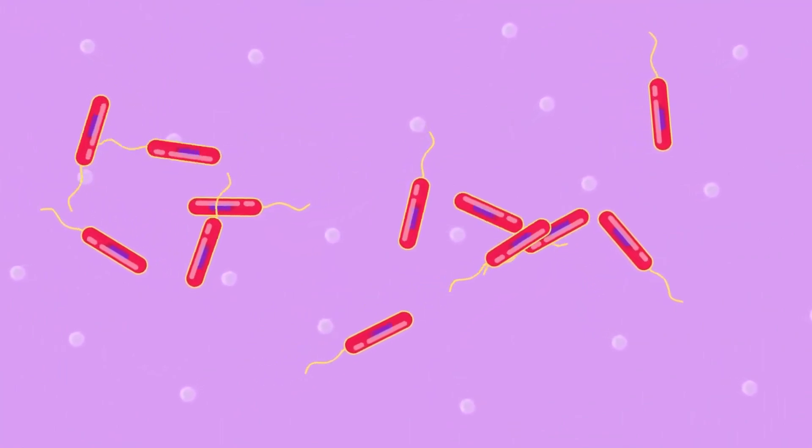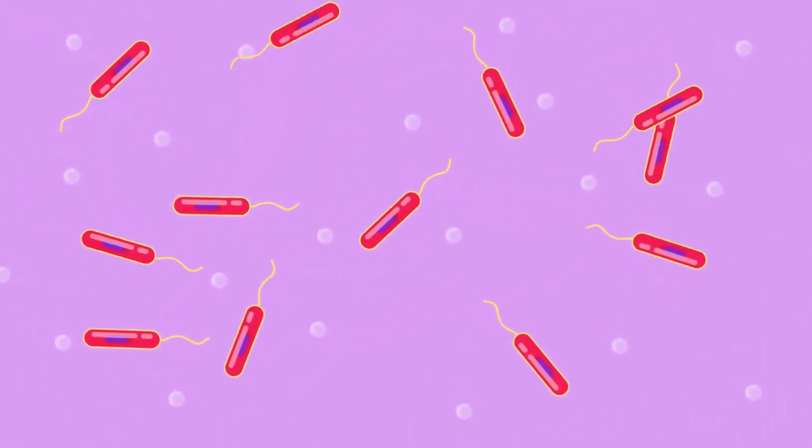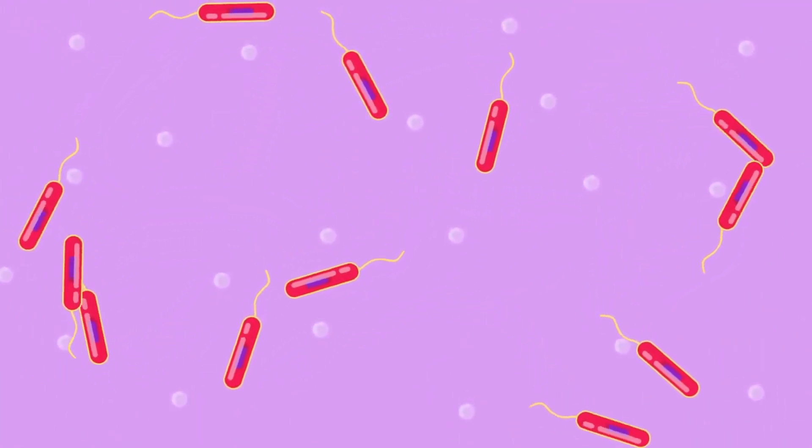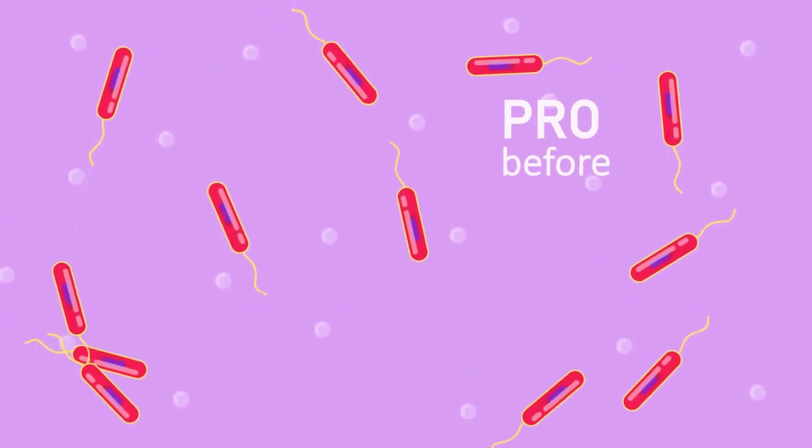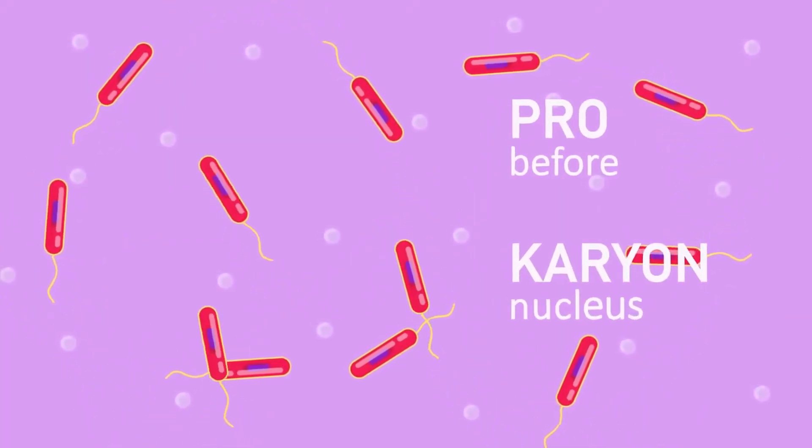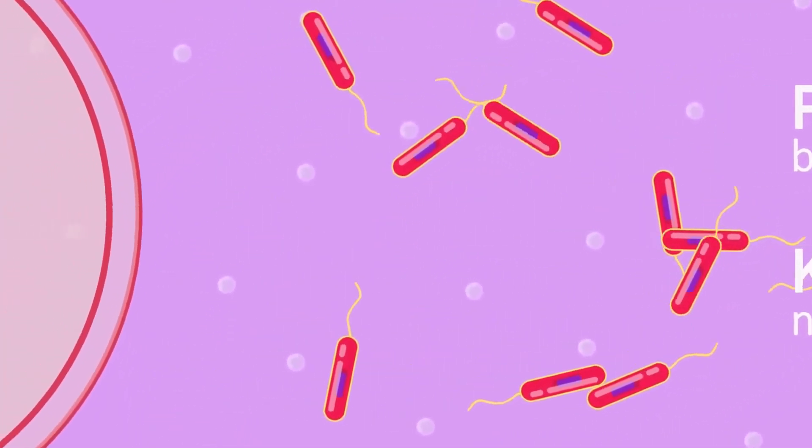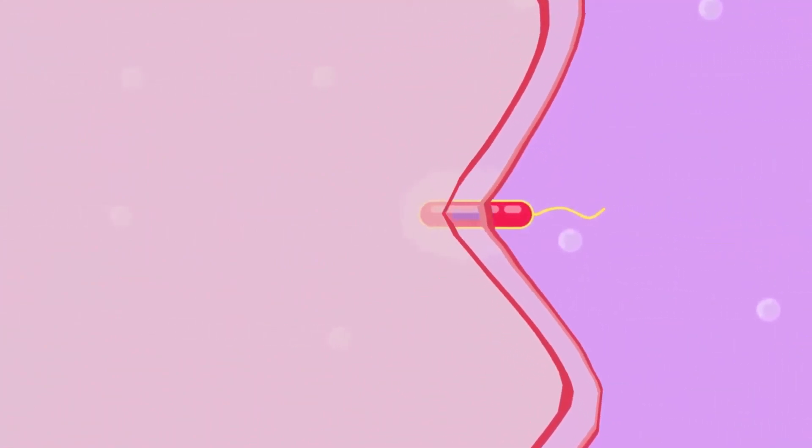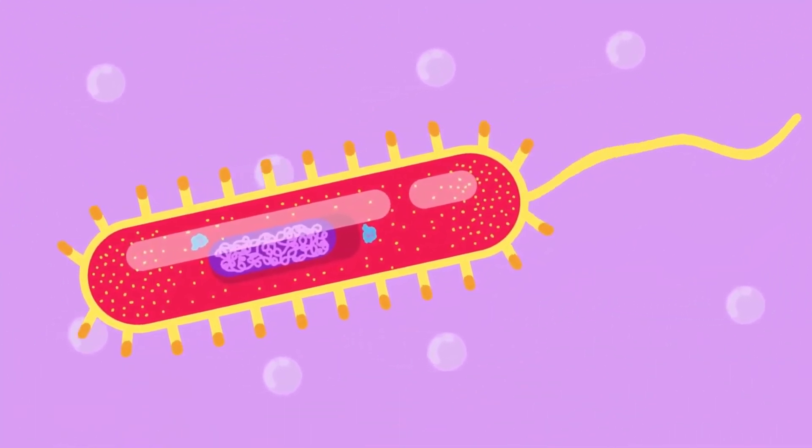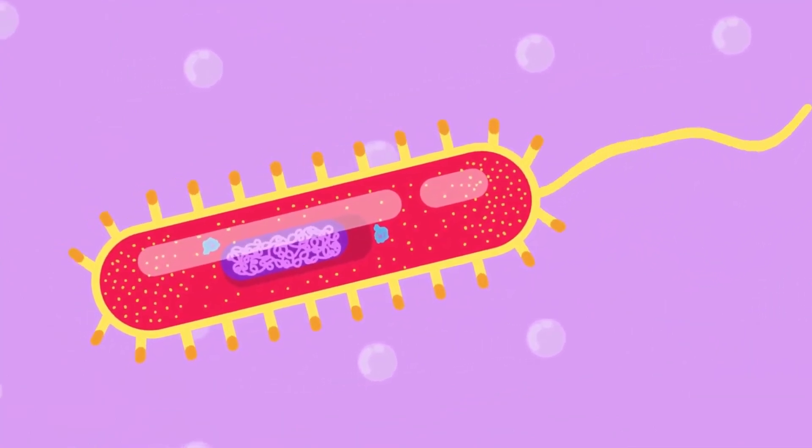The fundamental difference is that prokaryotes, such as bacteria, do not have a nucleus. The word 'pro' meaning before and 'karyon' meaning nucleus. Bacteria are also, on average, about one to ten times smaller in volume than eukaryotes. Because of the small functions, their structures are also simple.